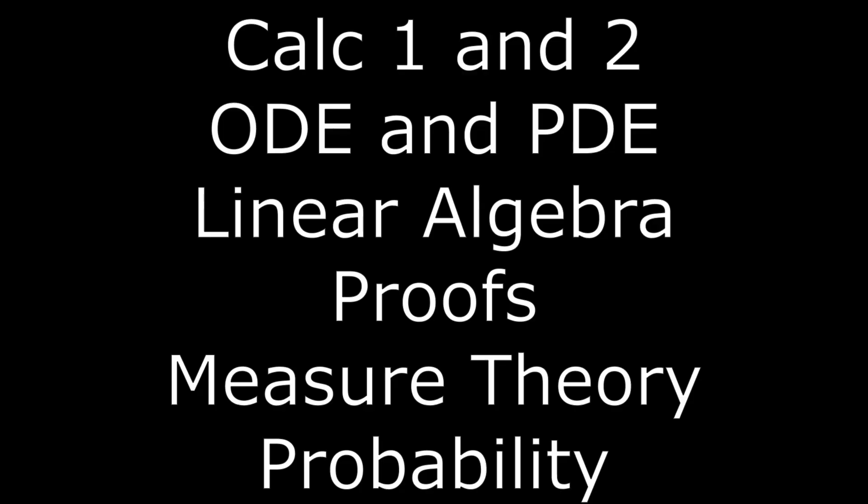To wrap up: focus on the basic traditional math — calculus (Calc 1, 2, maybe Calc 3), ODEs, PDEs, linear algebra, some proofs, measure theory, and probability. Those are the core foundations you're going to need. There are some other things you could do, but focusing on those will get you to a base foundation to be quite competent as a data scientist or machine learning engineer. Thanks for listening and watching — until next time.